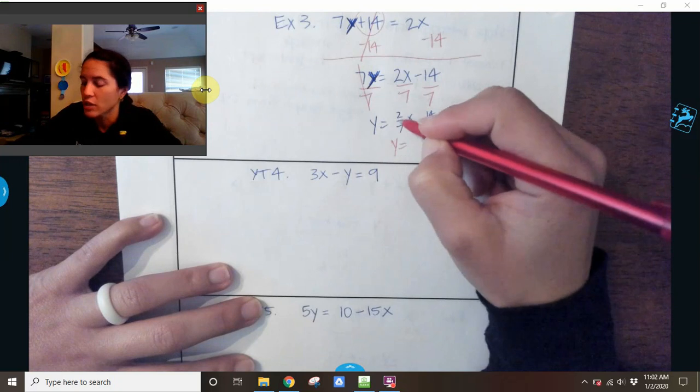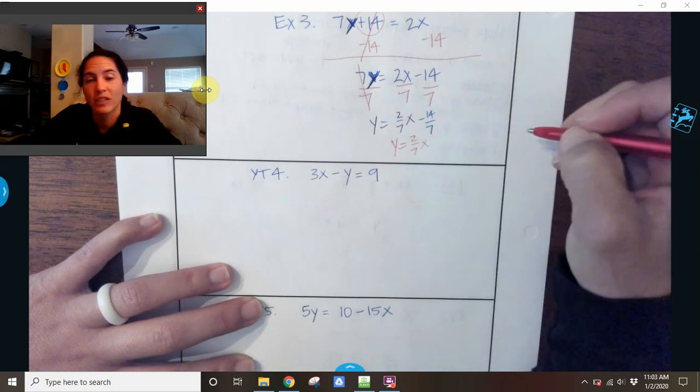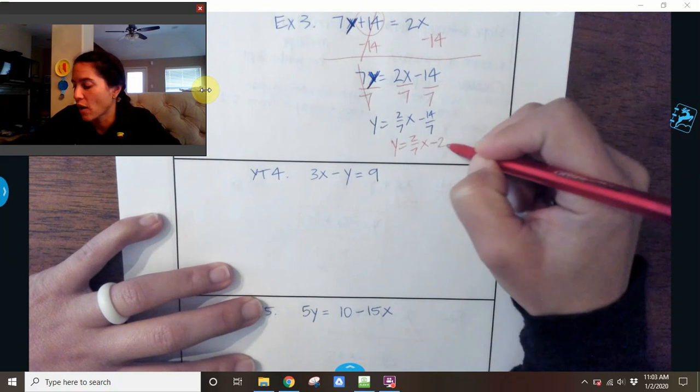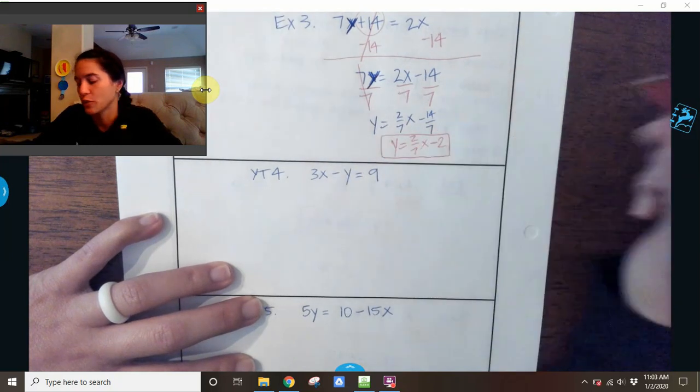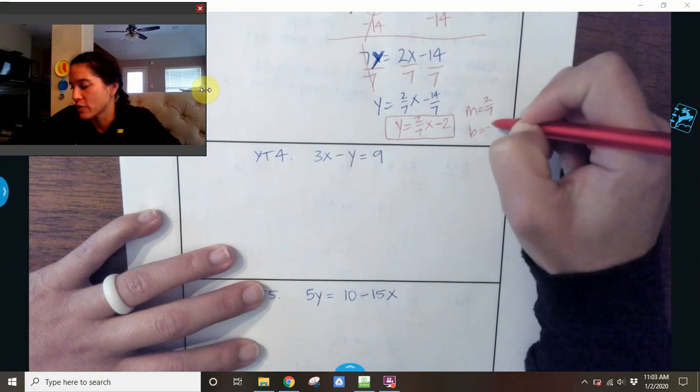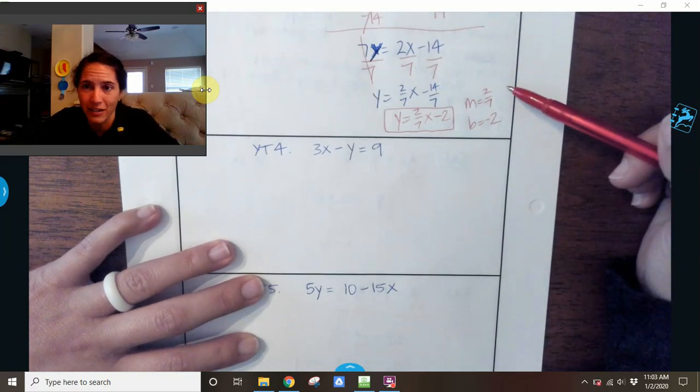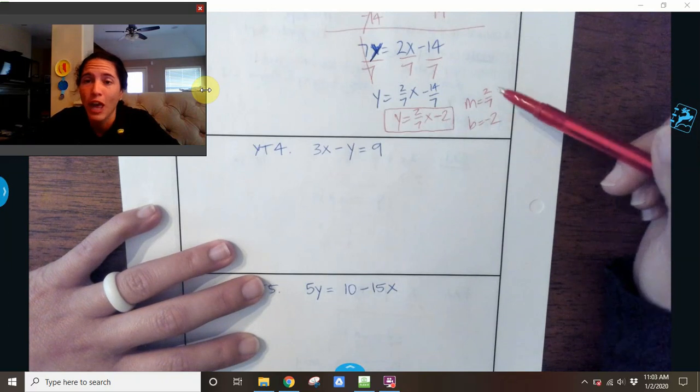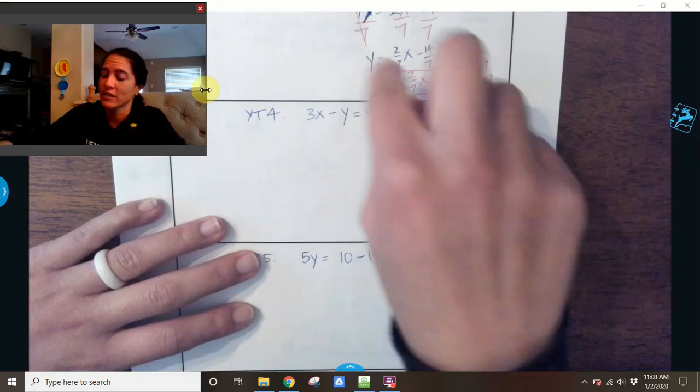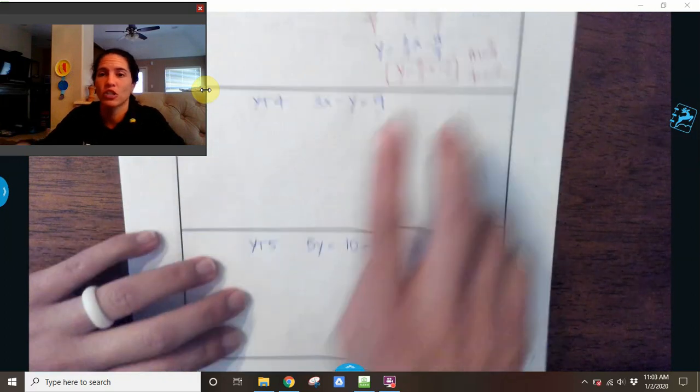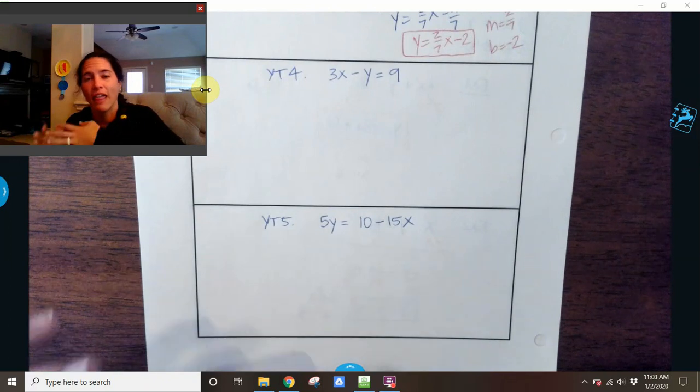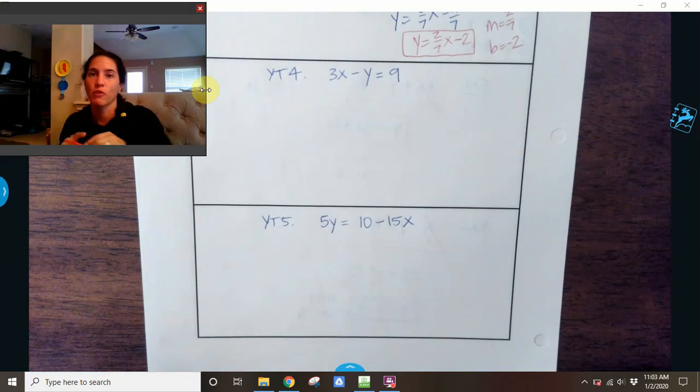And then my last step is I just want to simplify everything. So Y equals 2/7 is as simple as it can go, so it stays 2/7. But negative 14 over 7 can be simplified to negative 2. And then my slope is 2/7, and my Y intercept is negative 2. Notice, I'm not saying 2/7 X. X is not part of the slope. The slope is just the coefficient of X. X is a coordinate. An X and a Y is like an ordered pair. So your slope is just the 2/7. So you've got a couple of U tries. I want you to pause it and try. And then when you're ready to see your answer or follow along with me, press play.